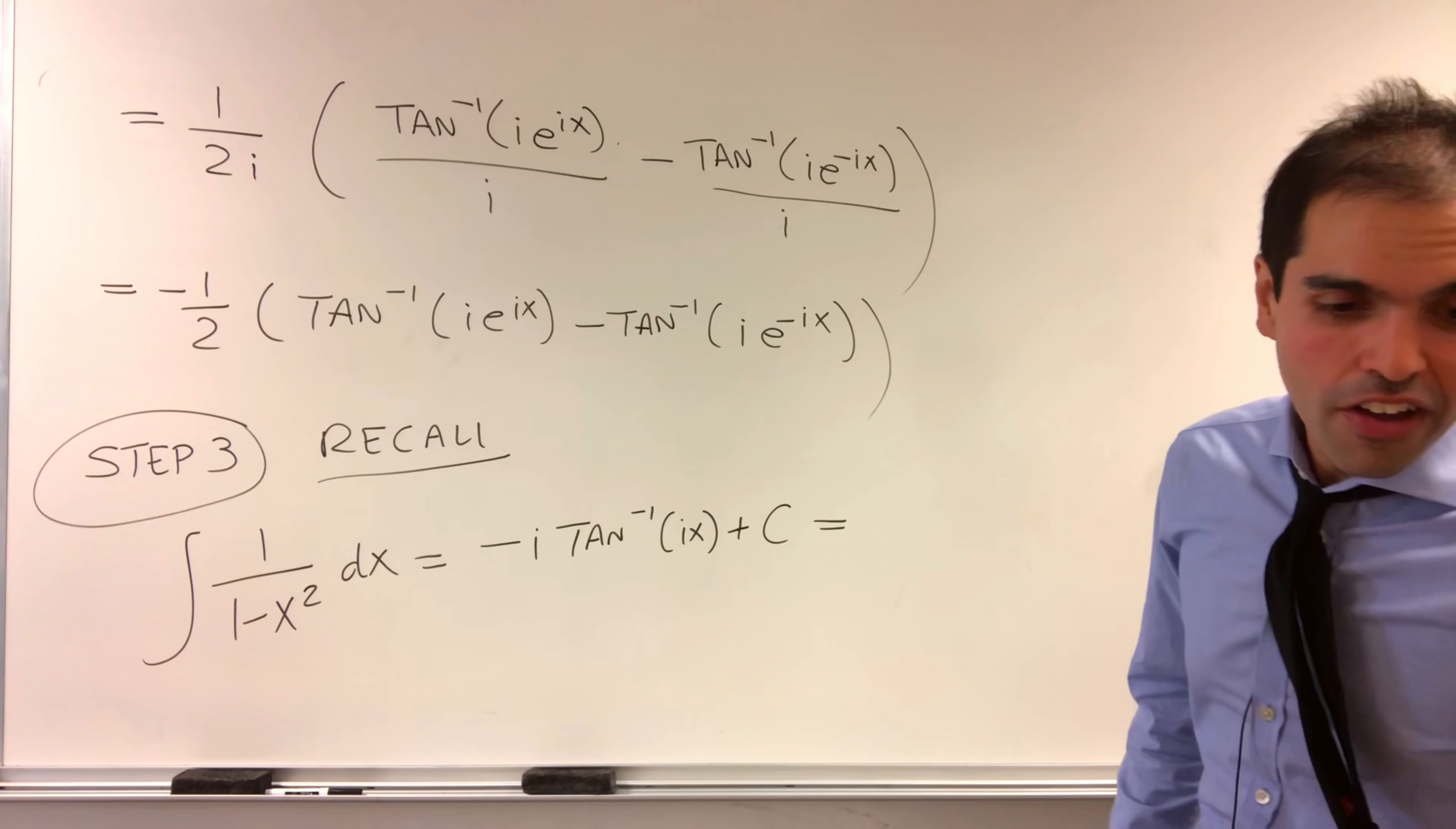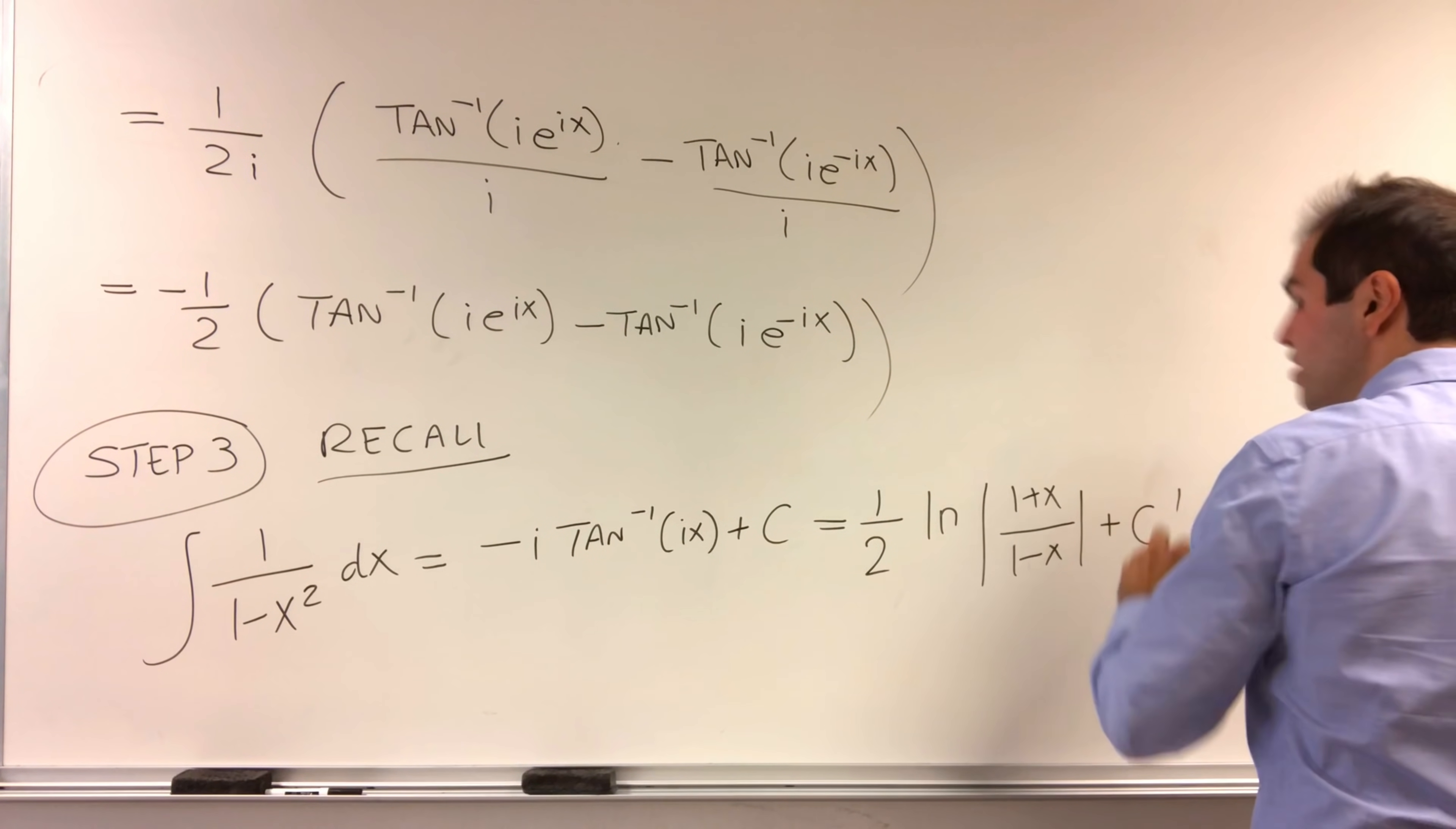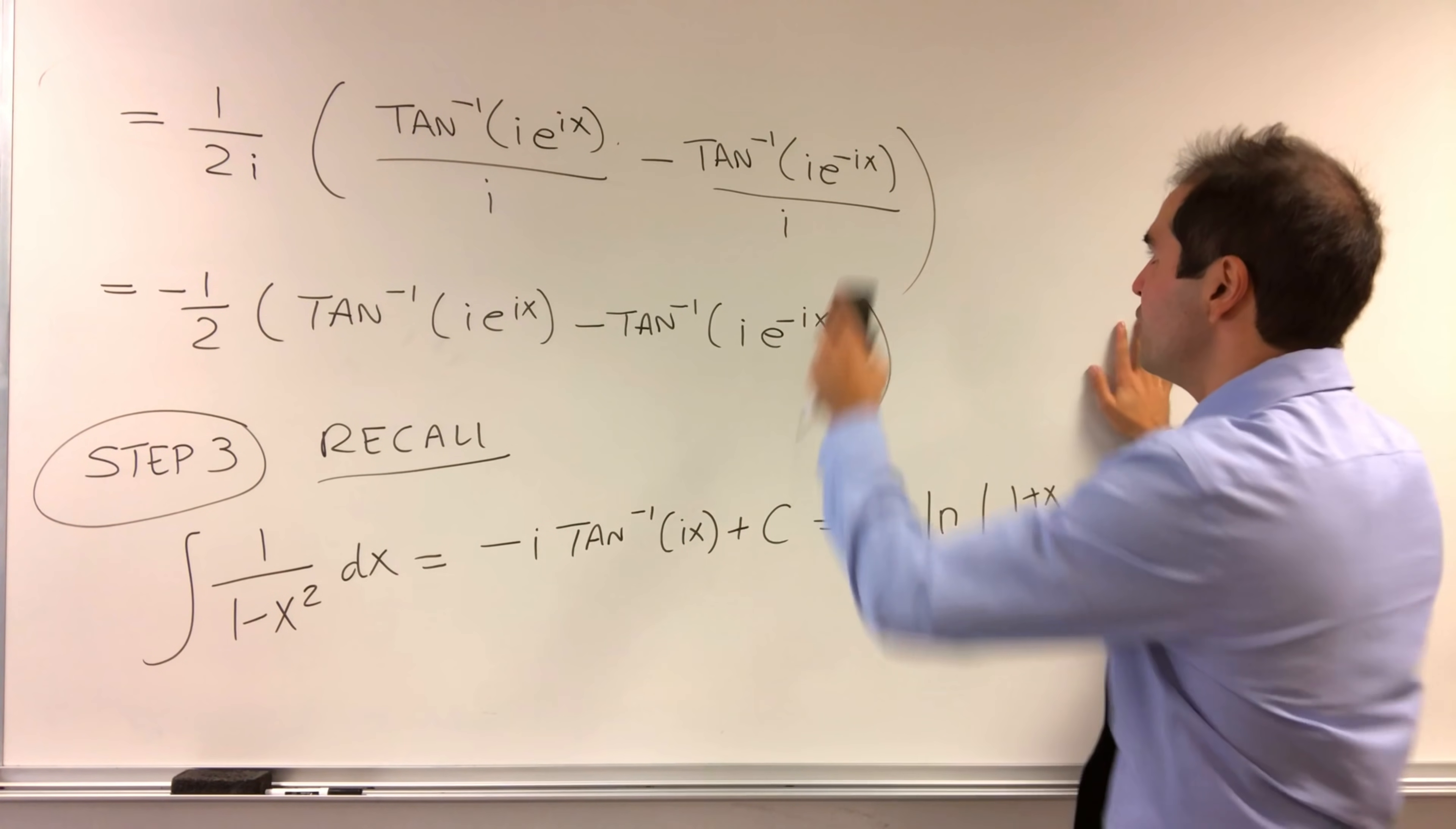On the other hand, we can find, using a partial fraction decomposition, that this is 1 half ln of 1 plus x over 1 minus x plus a different constant. However, plugging in x equals 0, we actually find that this is the same constant. And then we get a wonderful new identity that is extremely useful here.